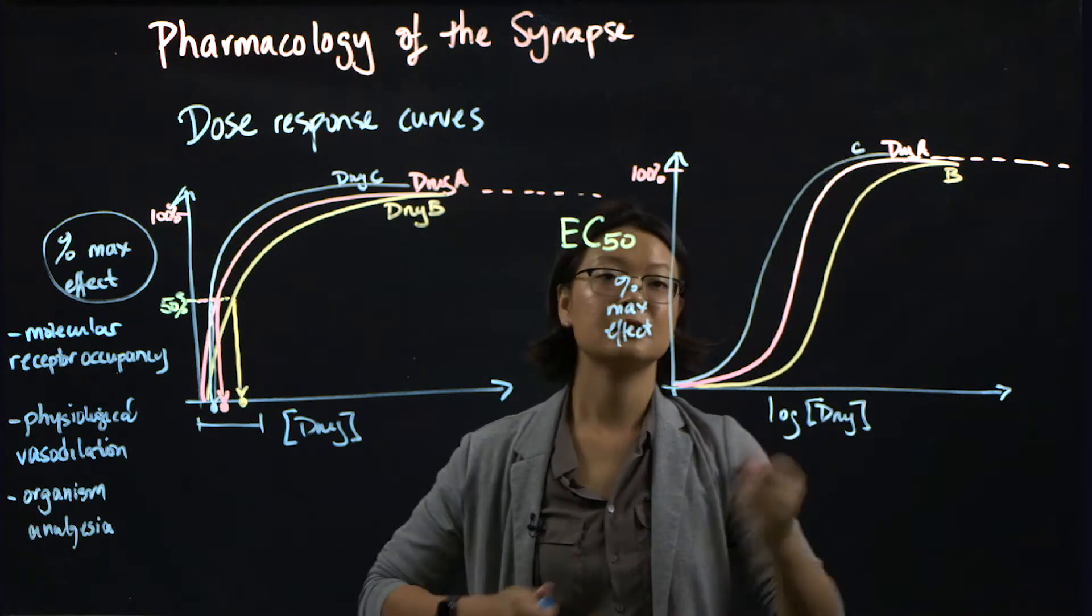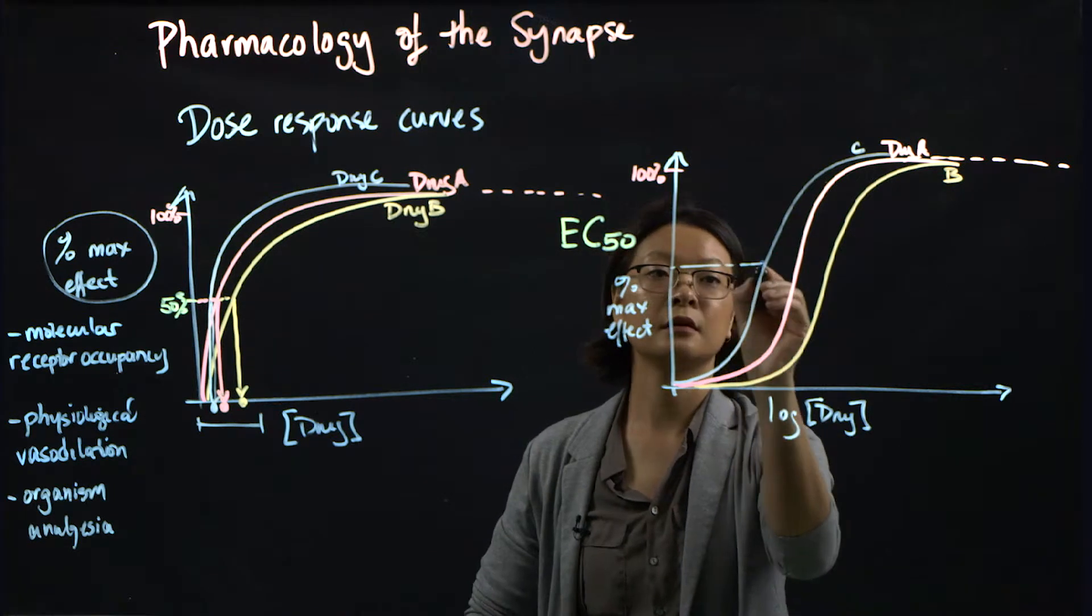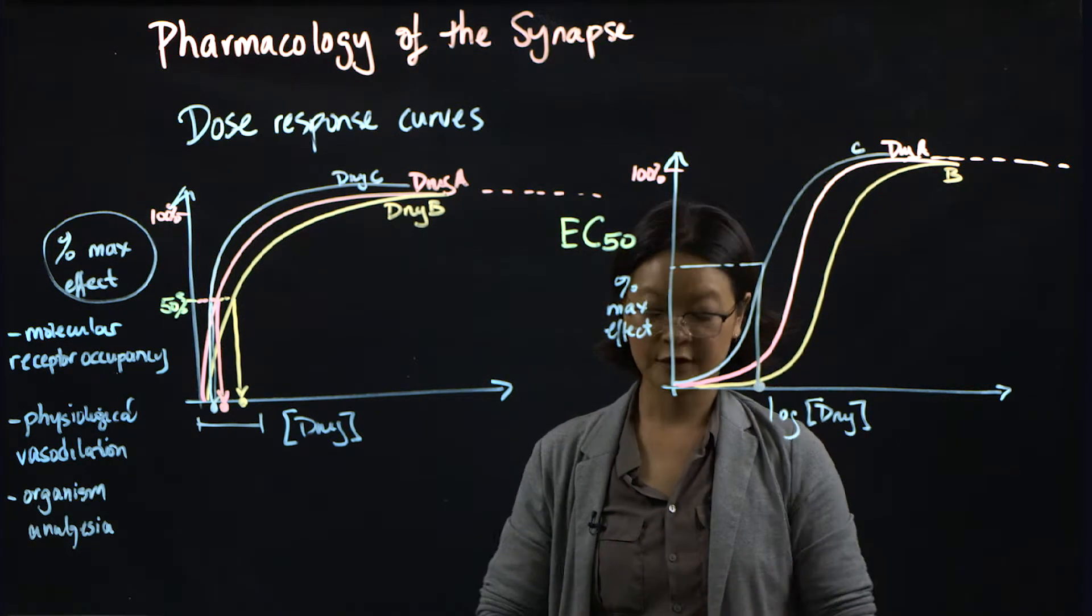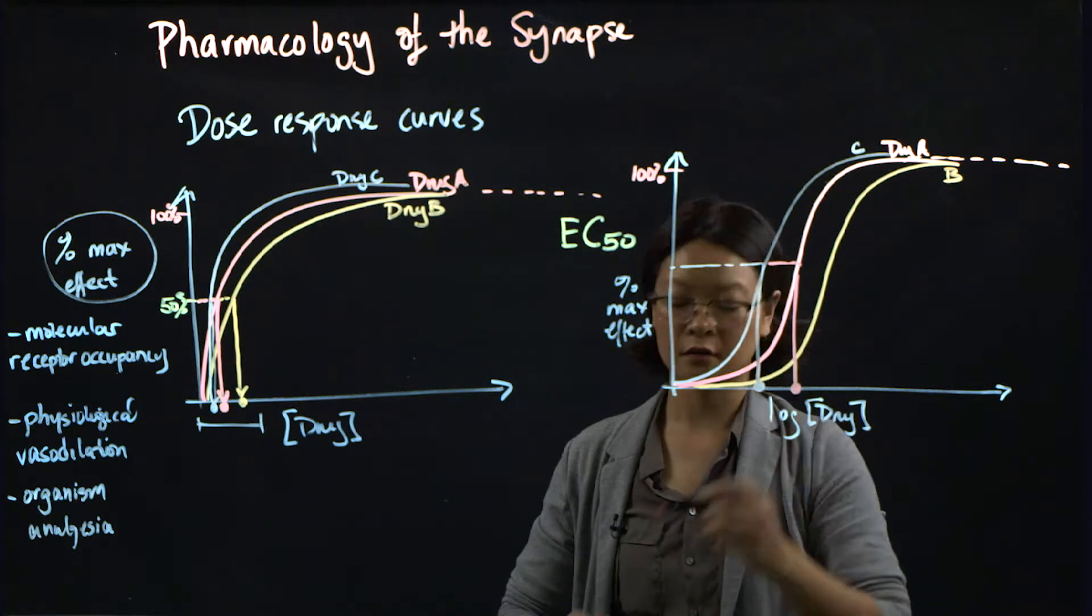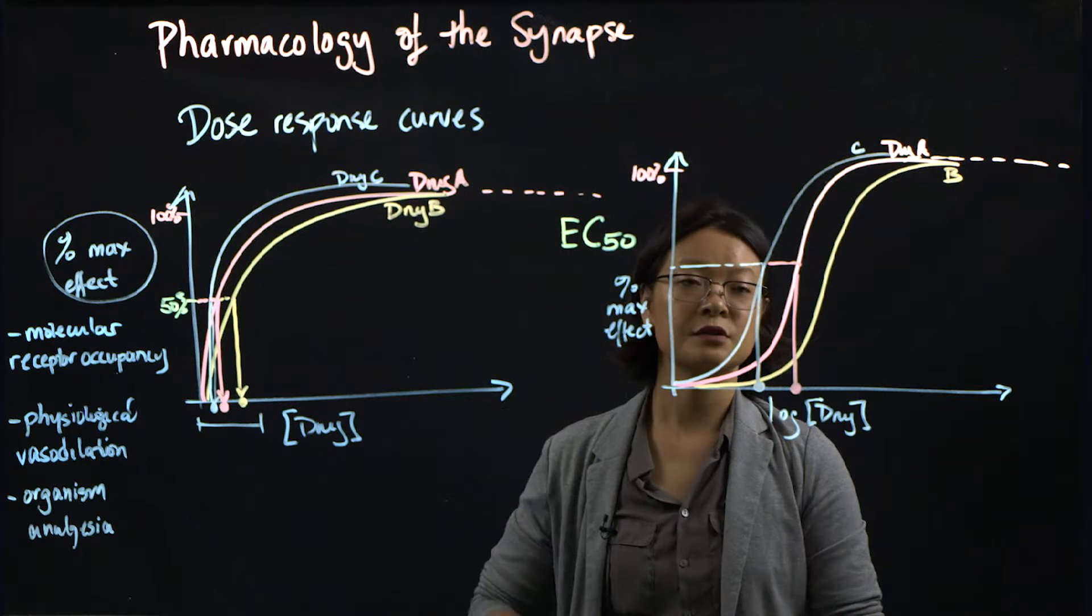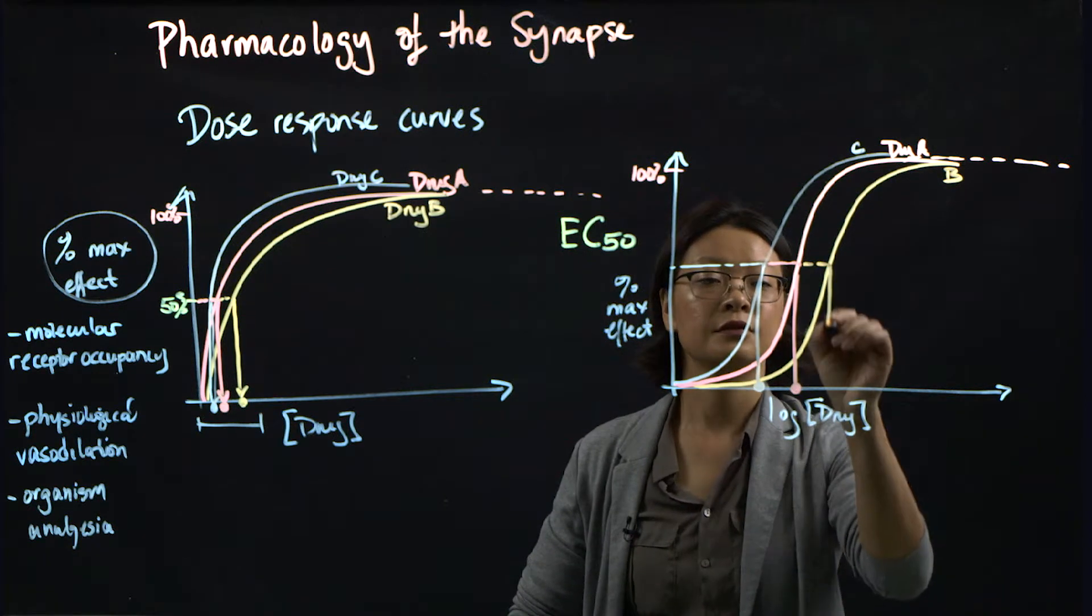So now you can see it's much easier to estimate where your 50 percent is for each one of these drugs. And you have a larger range on the x-axis to use.